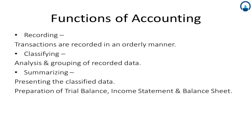The second step is classifying. In the recording process we have all the data. Classification is concerned with systematic analysis of the recorded data, with a view to group transactions of one nature at one place. The whole data from the recording step is classified by nature into groups — for example, all expenditures on advertising will appear in one place, all operational expenditures in one place, and production expenditures in one place.